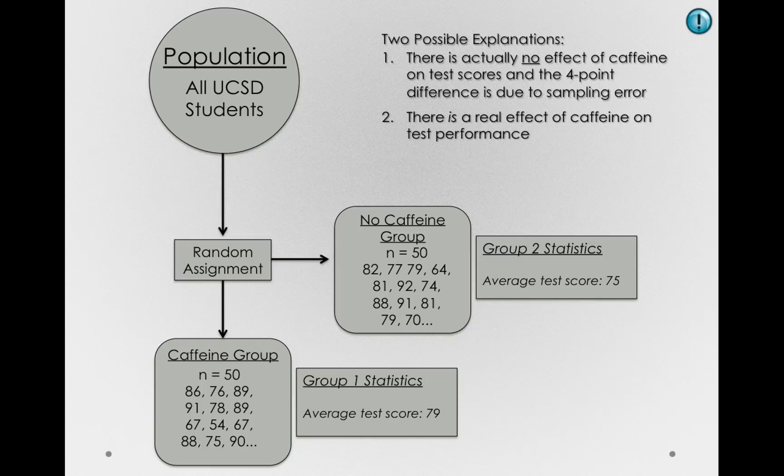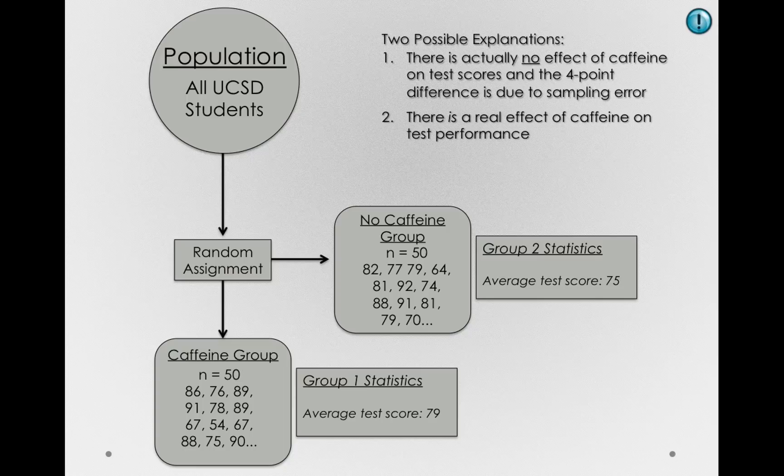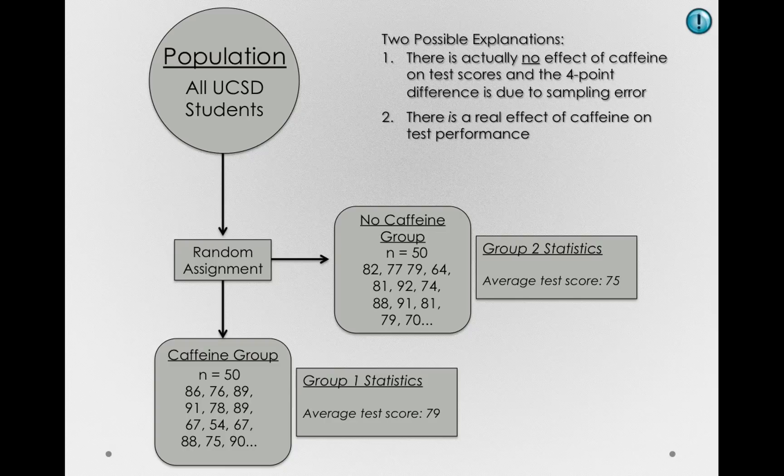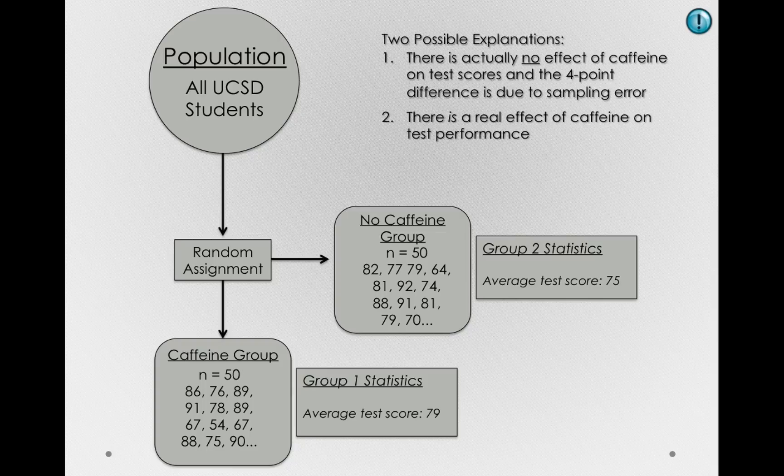Now, we'll come back to this point because this will be a critical piece of the logic of hypothesis testing. Every hypothesis test, in essence, is an effort to discredit that first explanation in science. We want to show that sampling error alone is not the cause of the differences we observe. In science, though, we have to consider that first explanation, and we have to accumulate sufficient evidence so that we can be confident that the first explanation isn't the actual explanation in the world.